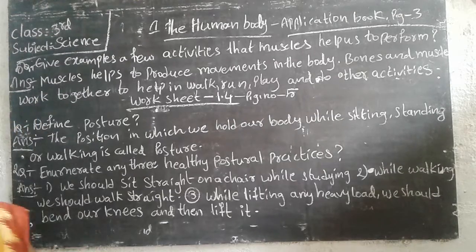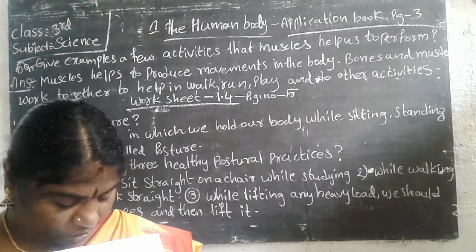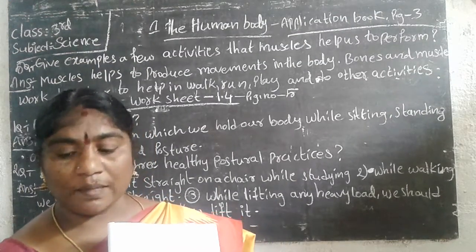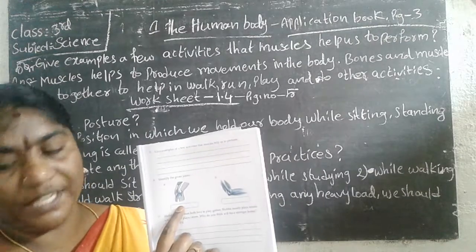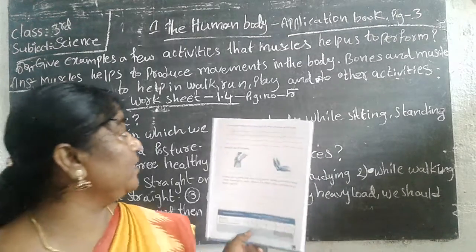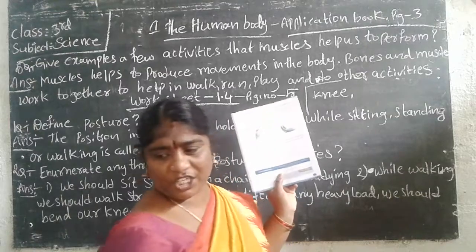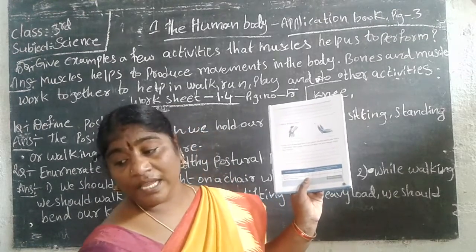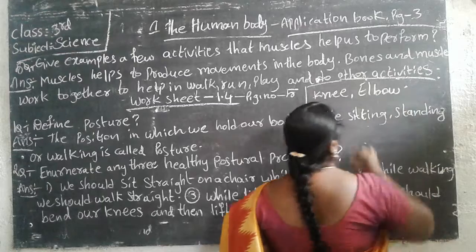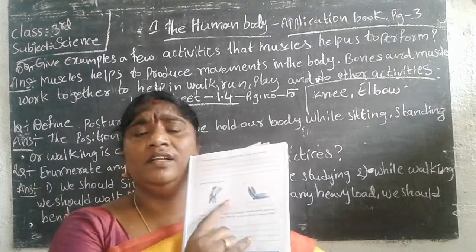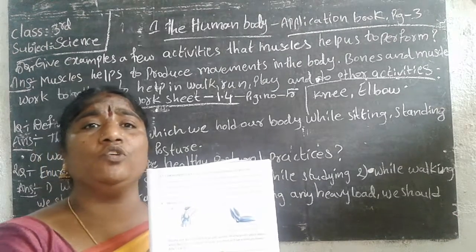Second worksheet completed. Page number 3 is there. Look at the pictures. Here is a picture to identify the joints. This is the knee joint — K-N-E-E. Here I am writing knee joint. Next one is the elbow joint — E-L-B-O-W. These are the two joints: knee and elbow. You should write in your application book page number 5.